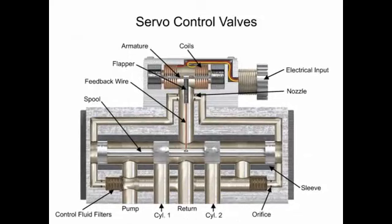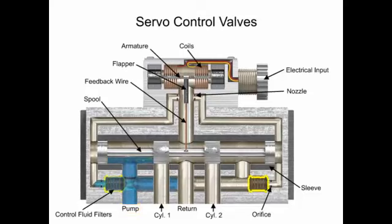Most industrial applications use feedback from electronic linear, rotary, or force transducers. A transducer is a device that produces an electrical signal in direct relation to a position, force, or speed. These devices feed a precise position or speed indication back to an electronic controller via a feedback wire, which in turn adjusts the valve.